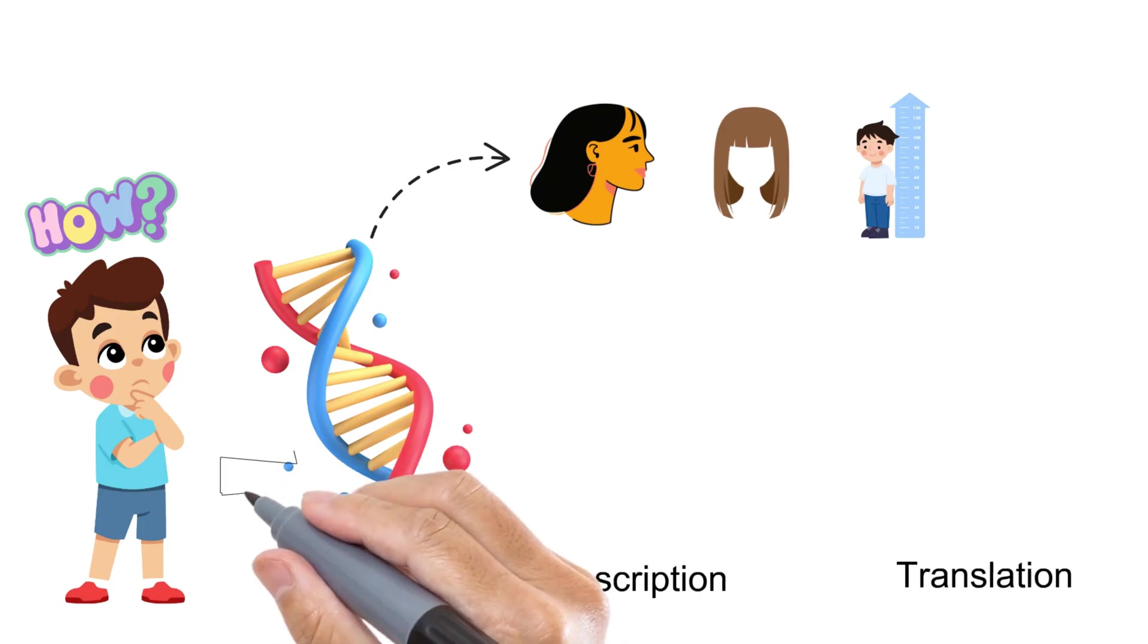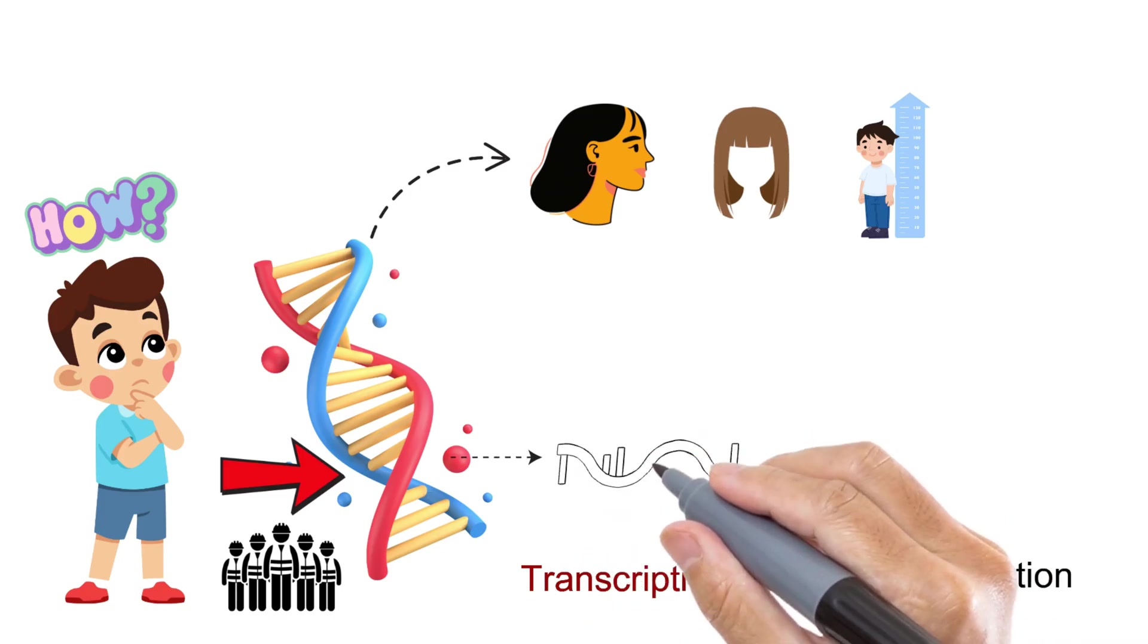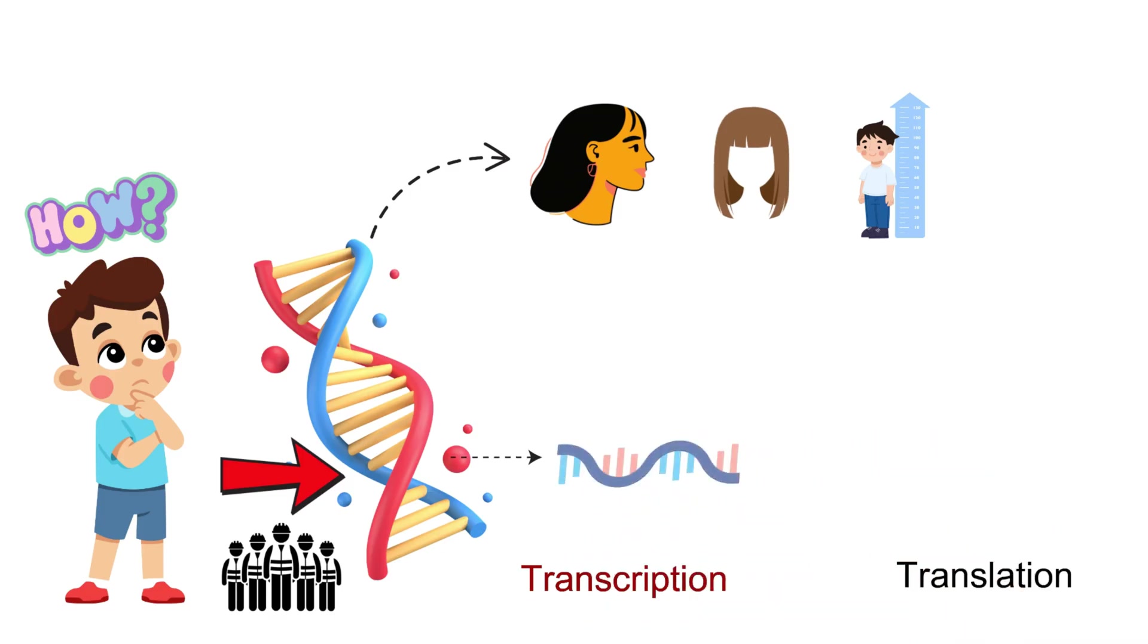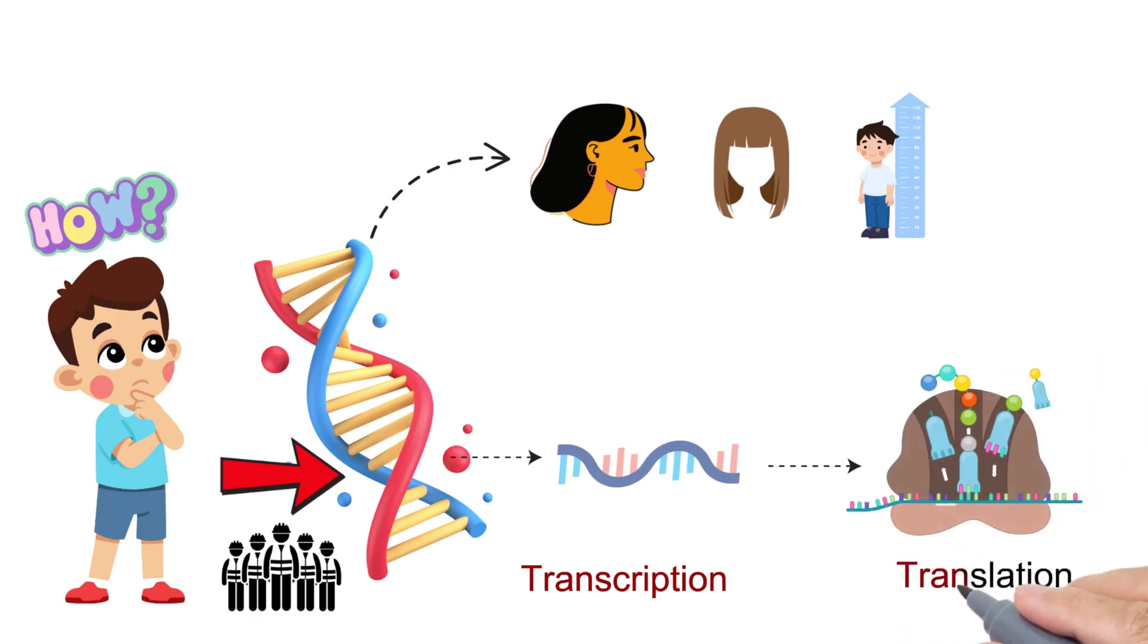Think of DNA as the master blueprint of your body. But blueprints can't build a house on their own, they need workers. That's where transcription comes in. In this step, DNA makes a working copy of its instructions called messenger RNA, or mRNA. Then ribosomes, the cell's protein factories, step in for translation. They read the mRNA code and build proteins according to the instructions. And here's the key: proteins are what actually give you your traits.